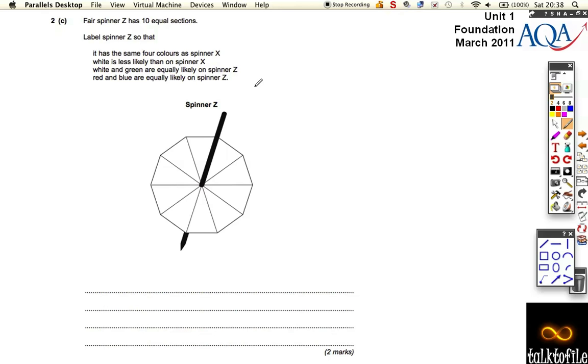And then this one says, First spinner Z has 10 equal sections. It has the same four colours as spinner X. White is less likely than on spinner X. White and green are equally likely on spinner Z. And red and blue are equally likely on spinner Z. So we know it's got red, green, blue and white. Same as the others. I've just reversed those orders. Let's write them in the same order.